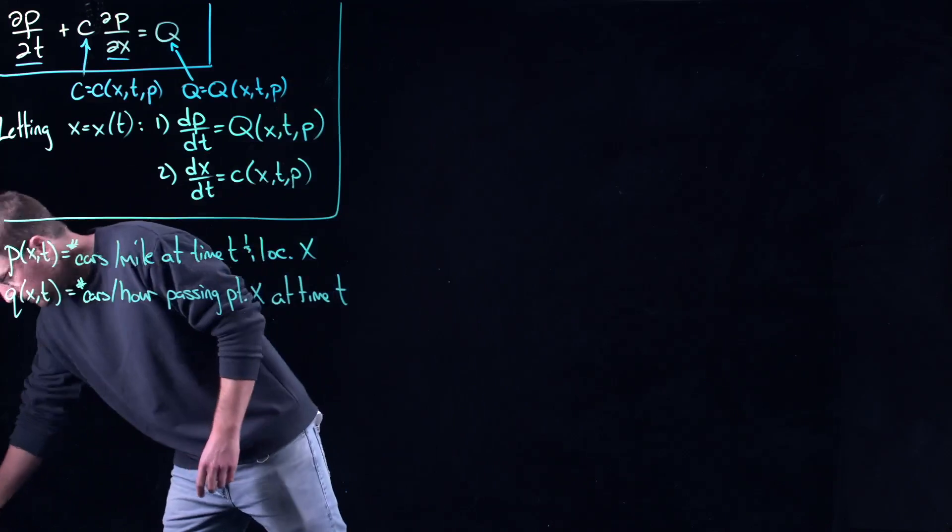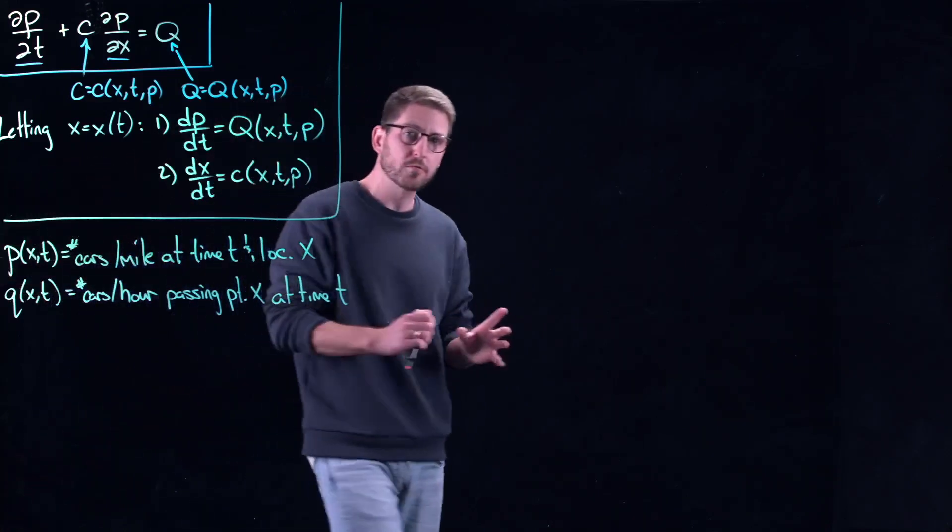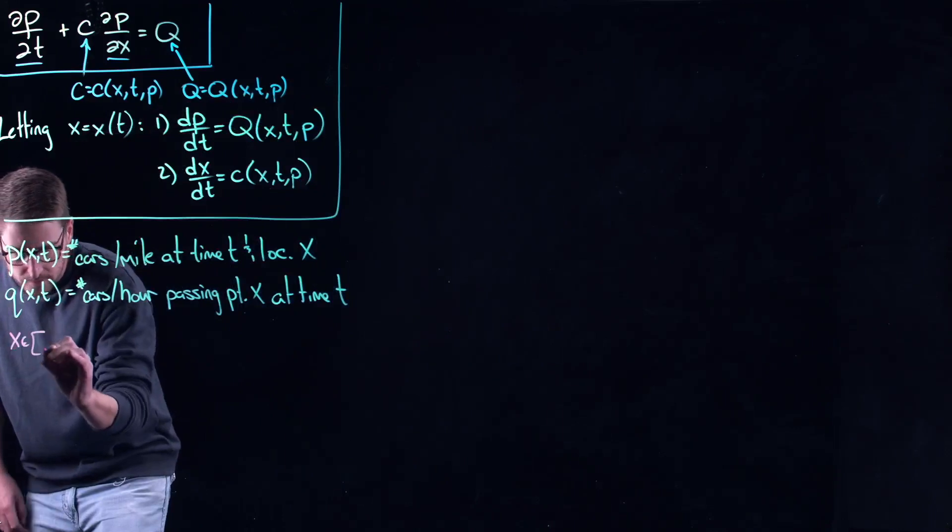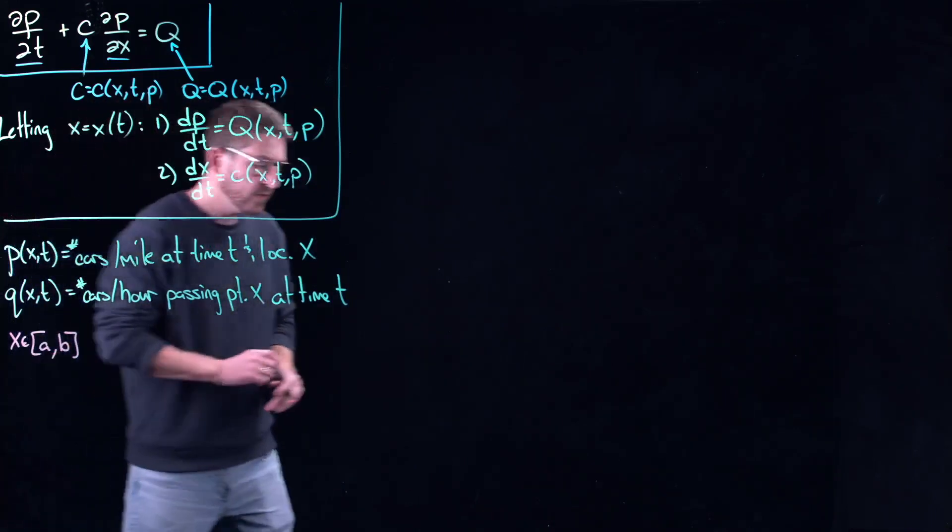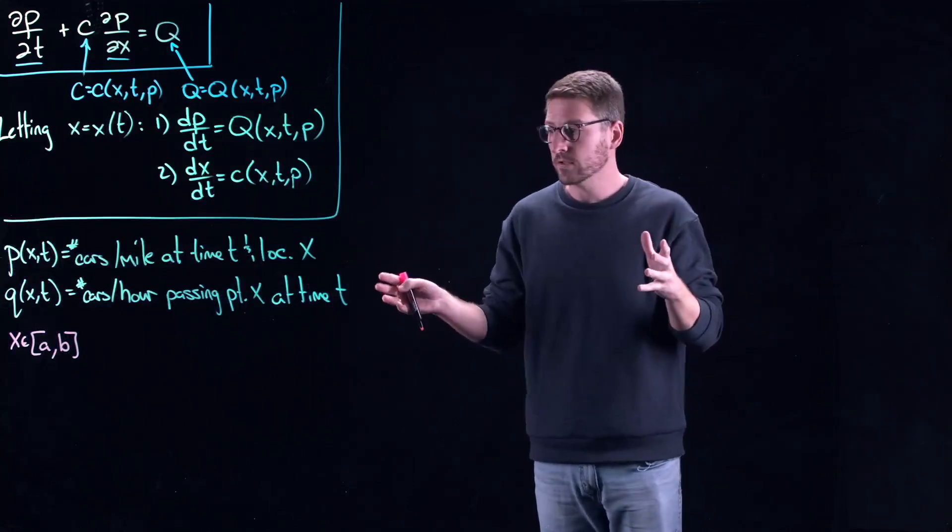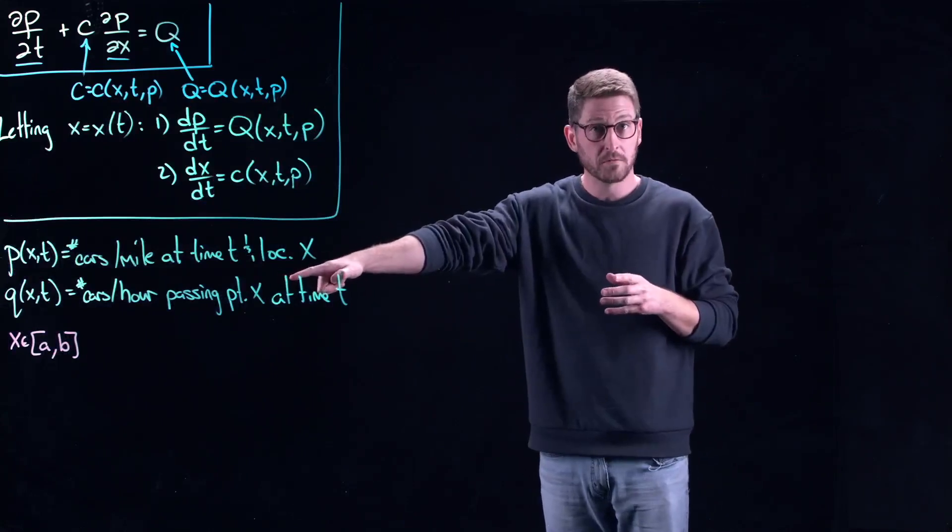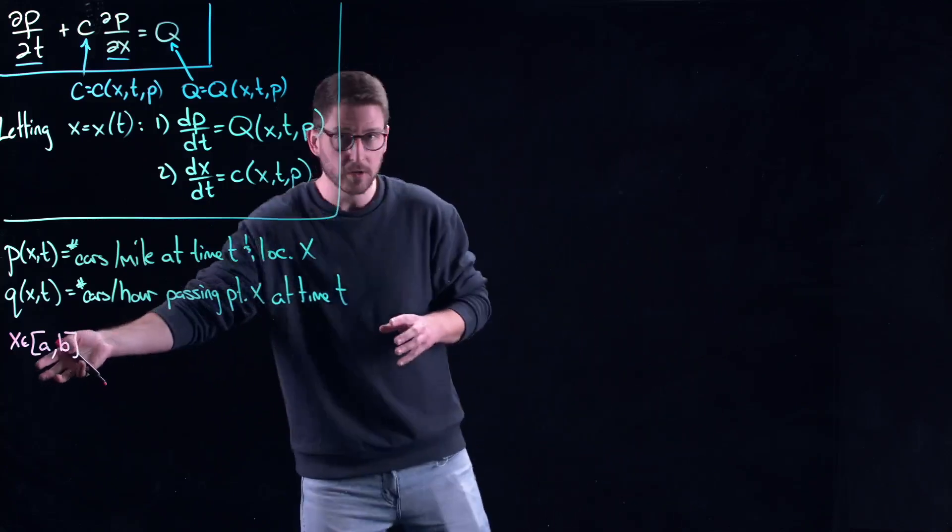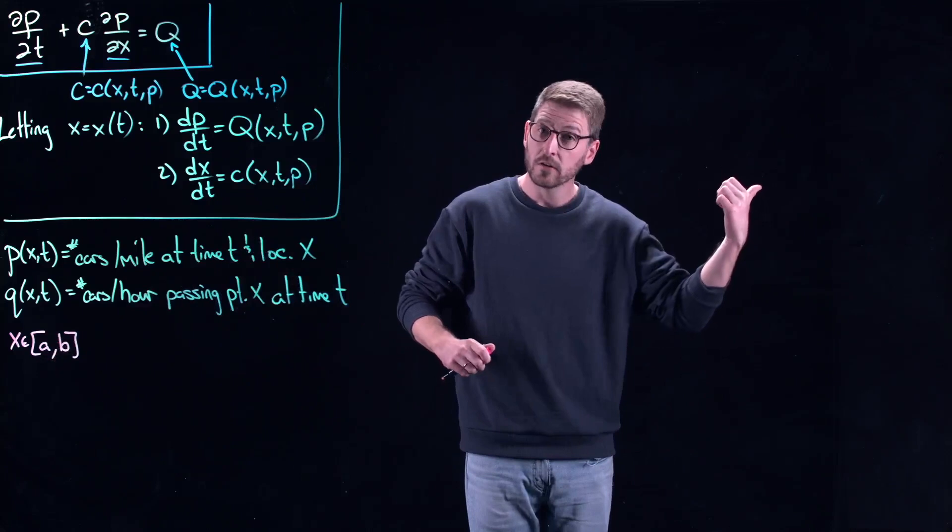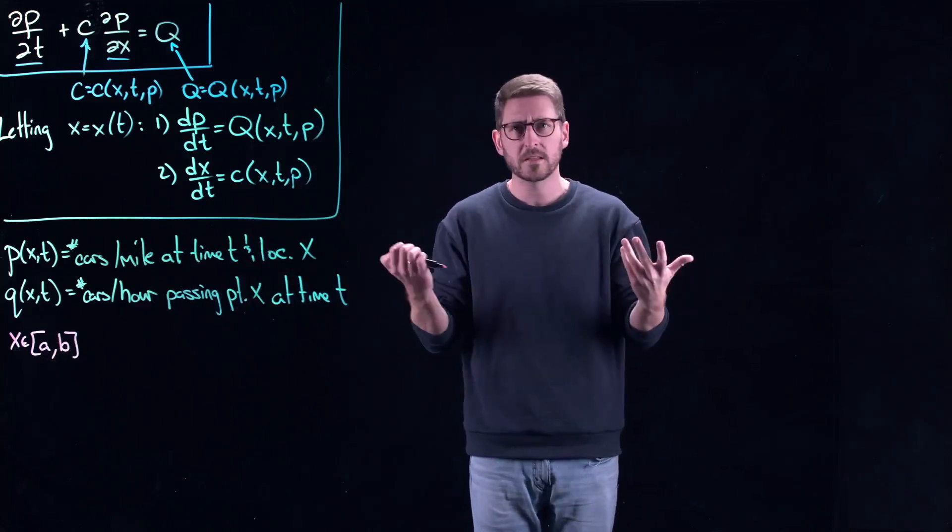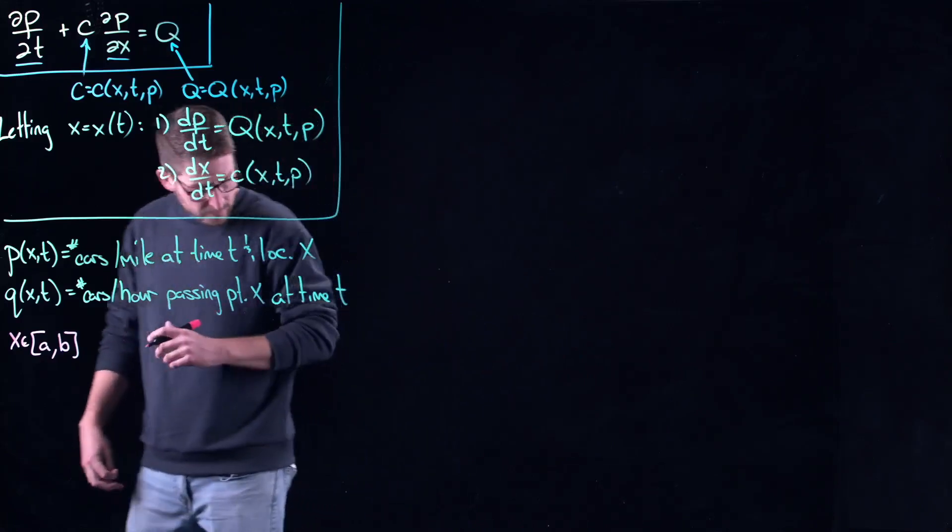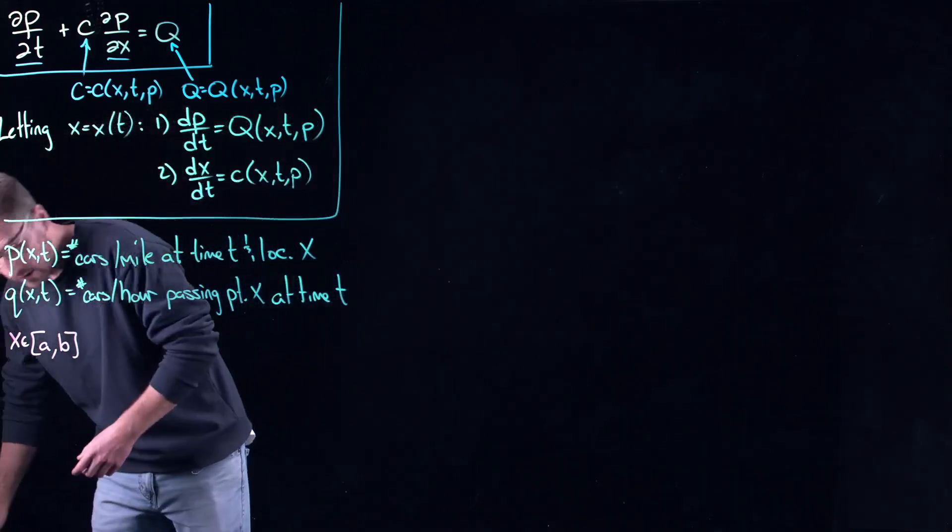What we're going to do is consider just a fixed portion of road, say a start point and an end point A and B. Here's the modeling assumption that we'll make: we'll assume that there are no exits or entrances between A and B on our road. The only way to get into our piece of the road is to drive in through A and the only way to get out is to drive out through B. You can think about this as maybe a highway or something like that.